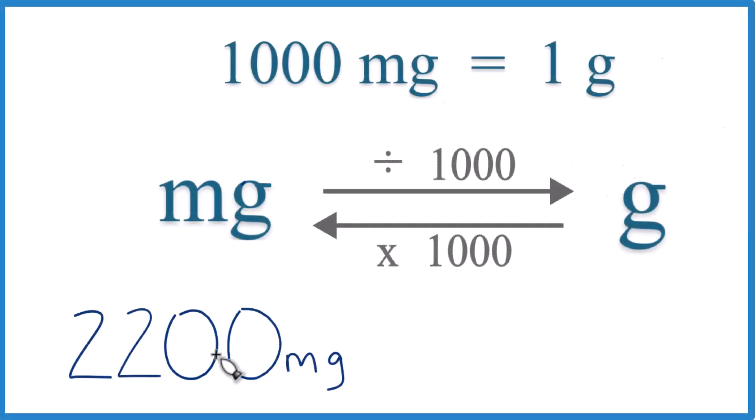If you're given 2,200 milligrams and you want to get that to grams, here's how you do it. There are 1,000 milligrams in one gram. So 1,000 milligrams equals one gram, and that's a conversion factor. We need that when we're converting from milligrams to grams or grams to milligrams.